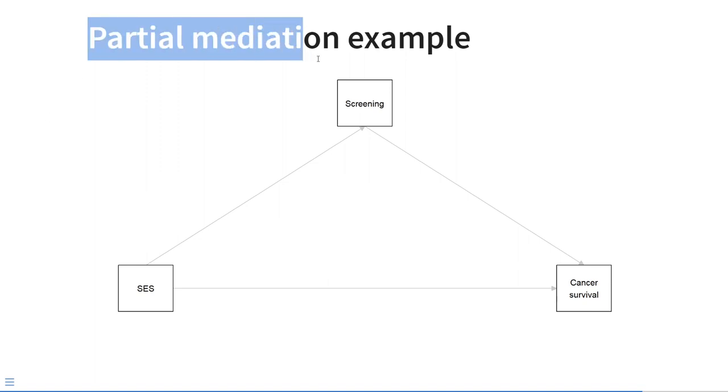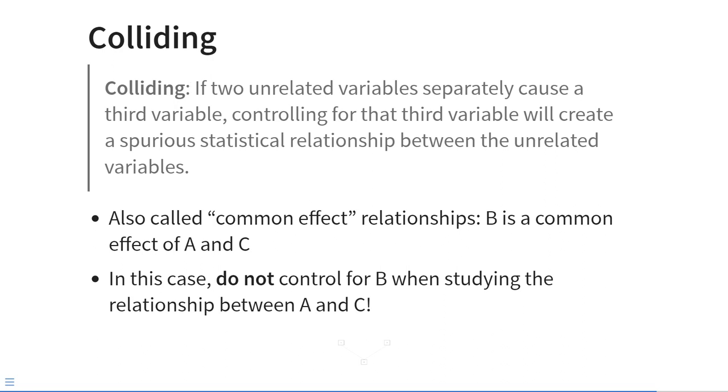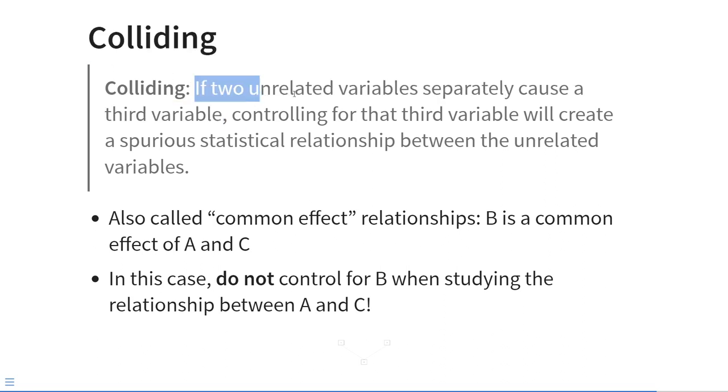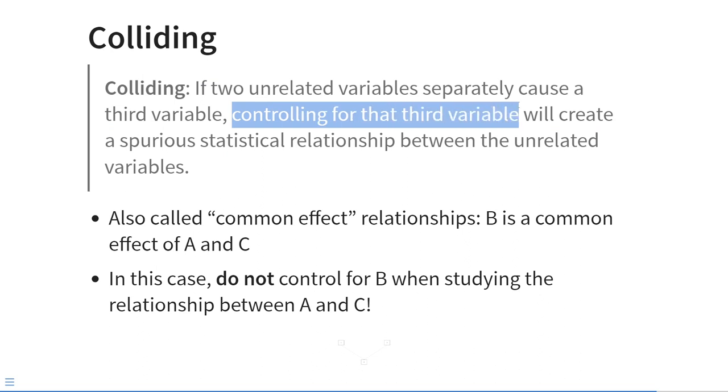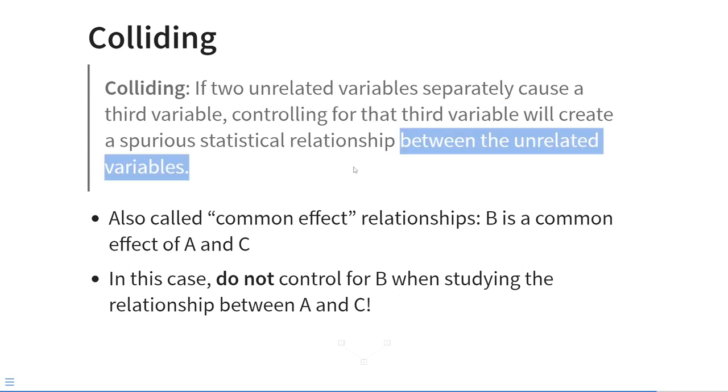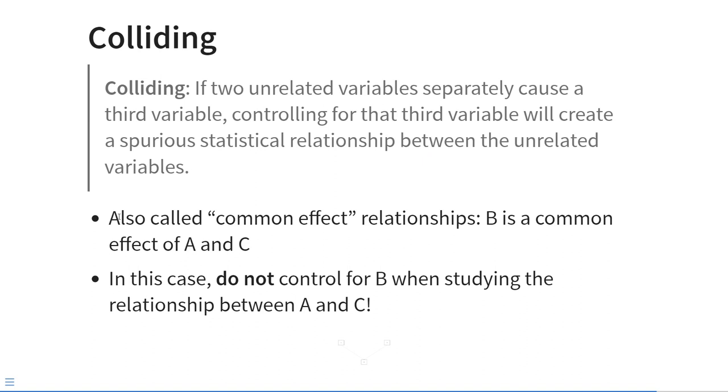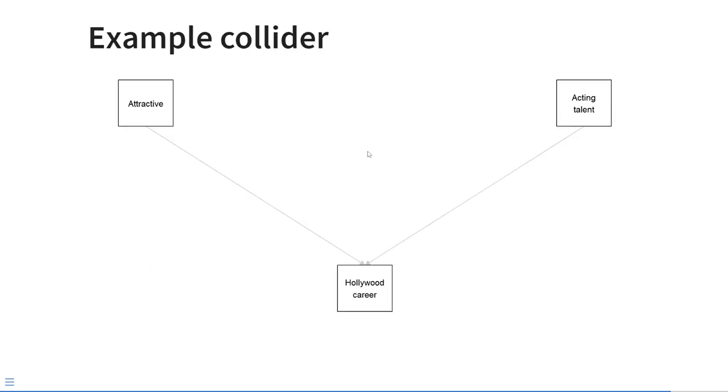And finally, the third situation is called colliding. So colliding occurs when two unrelated variables both cause a third variable. In this case, if you were to control for that third variable, we would introduce a spurious statistical relationship between the two unrelated variables. This is also called a common effect relationship. The third variable B is a common effect or an outcome of both A and C. In the case of colliding, you absolutely do not want to control for B when studying the relationship between A and C, because controlling for B would create a spurious relationship between A and C. This is a huge problem.